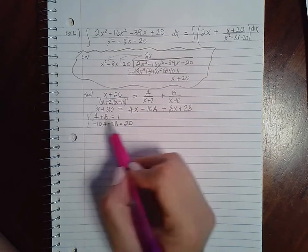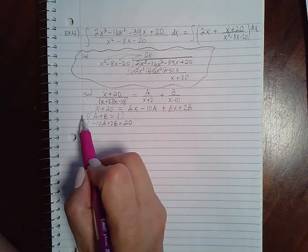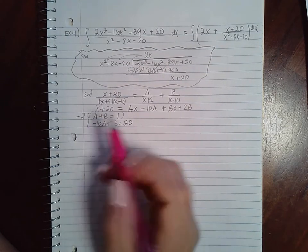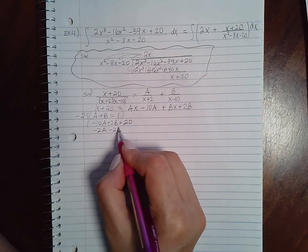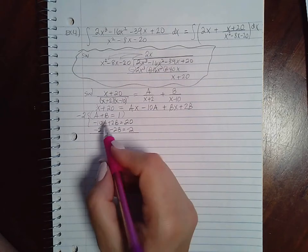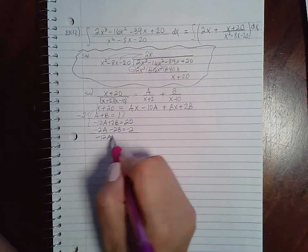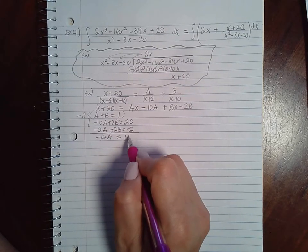So then if I do my elimination rule, I can multiply this by negative 2. So I get negative 2a, negative 2b equal to negative 2. I get negative 12a, b's cancel, and 18.